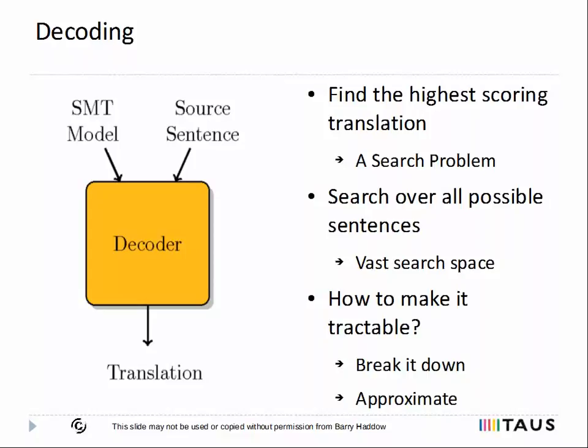Once you have an SMT model, it is able to assign a score or probability to every possible translation. So the job of the decoder is simply to find the highest scoring translations amongst all possible translations. However, the number of possible translations is actually so vast that there's no way to search them exhaustively. So the decoder uses two main tricks to make this search tractable. The first trick is to decompose the translations so that they're built up and scored piece by piece — this is a lossless technique for the normal types of translation models that we use. The second trick is to prune the translation space so that only a fixed number of possibilities are considered at each stage of the search. This method is an approximation — in other words, the highest scoring translation may be pruned out during the search process. With these two tricks, we can make decoding tractable.